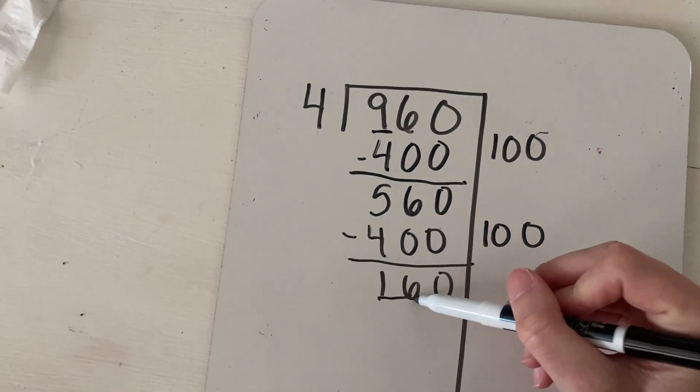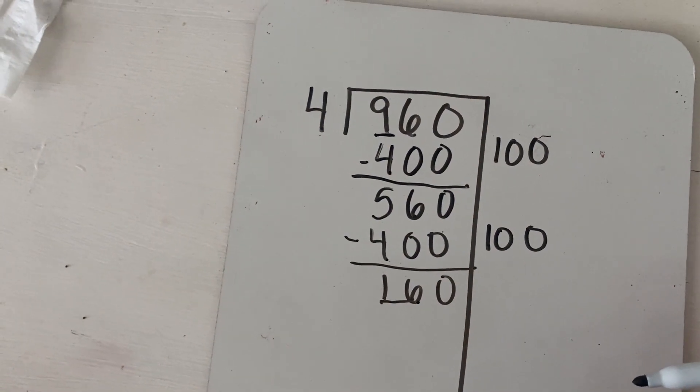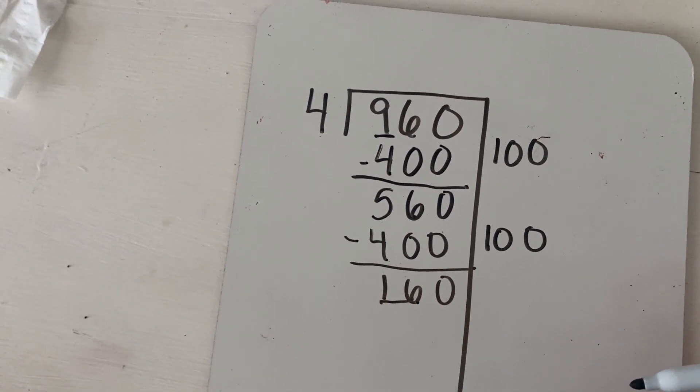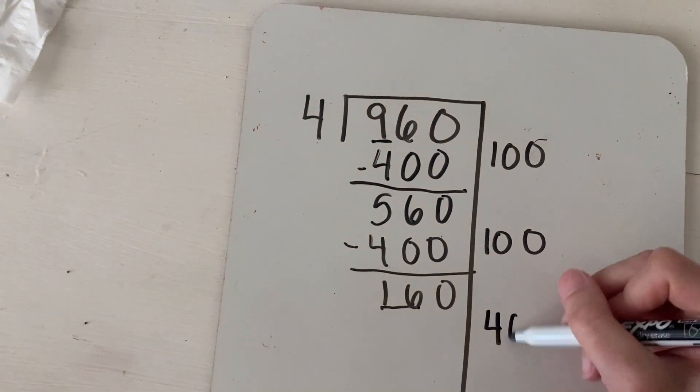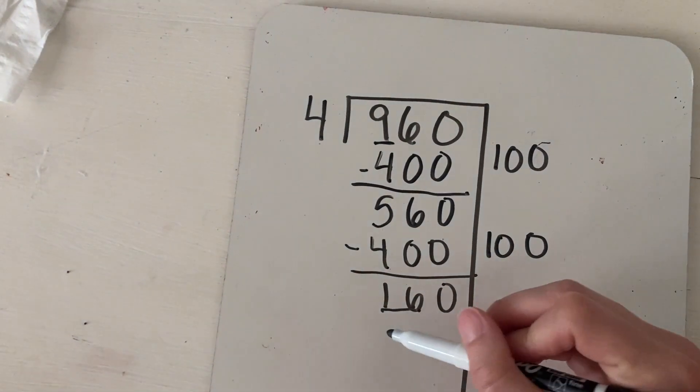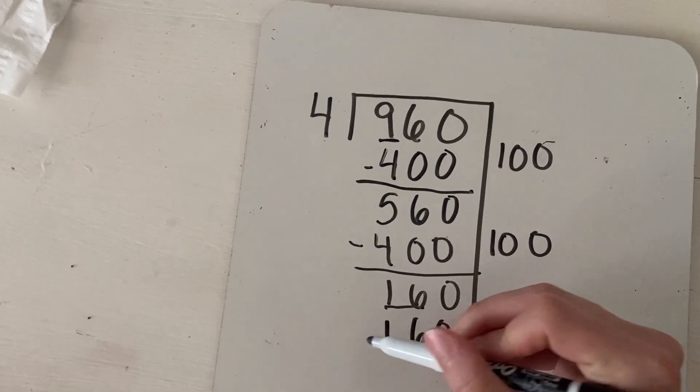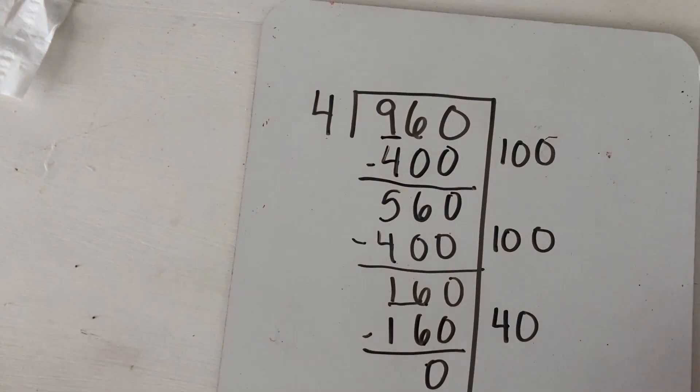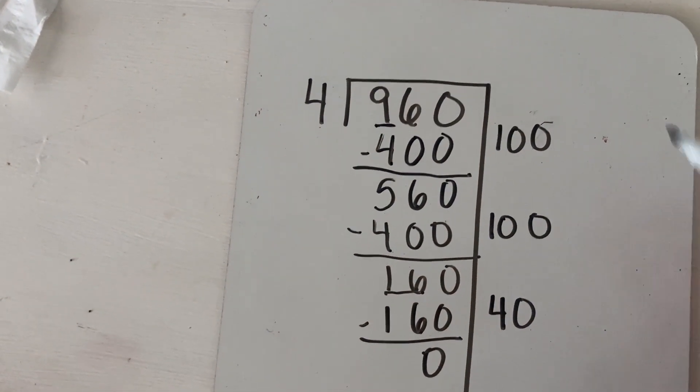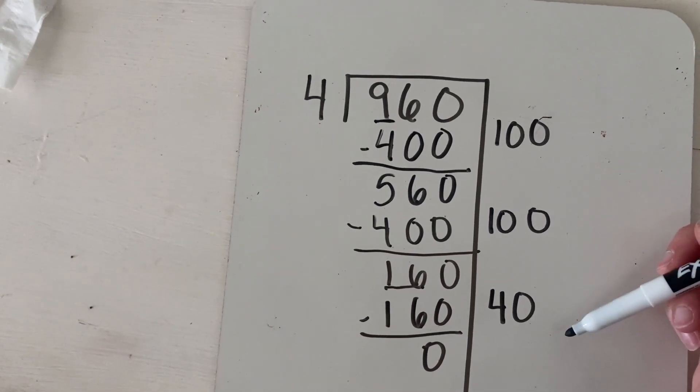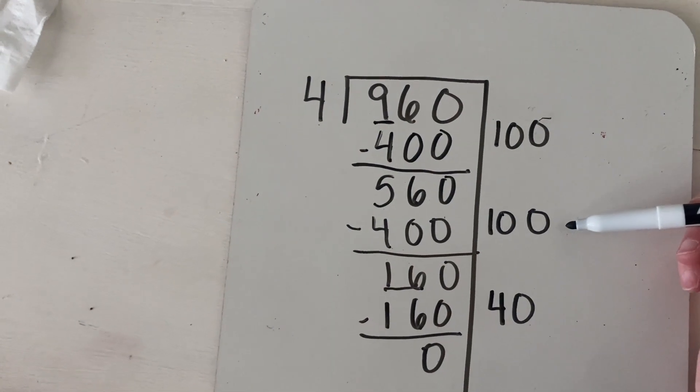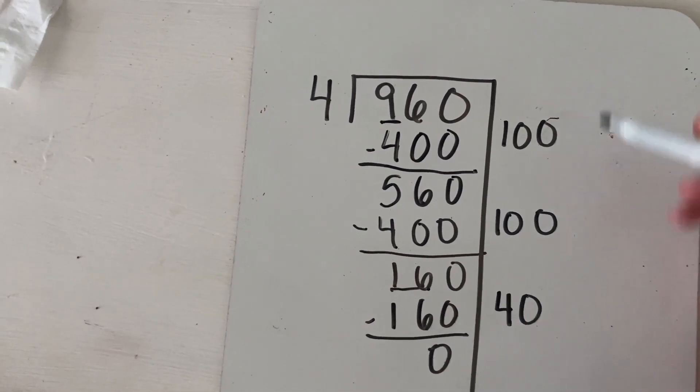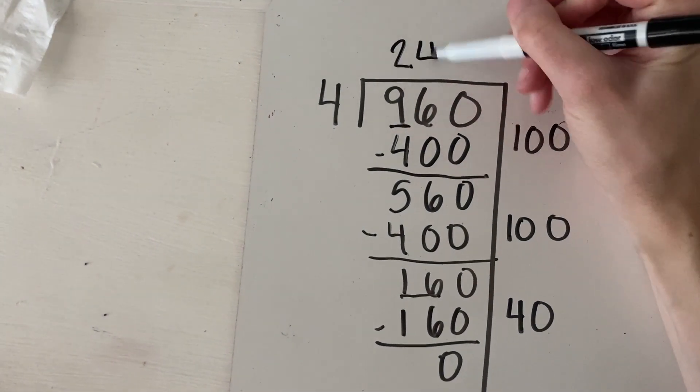So I might notice this has a 16 in it. And I know that four times four is 16. But there's an extra zero here. So what if I did four times 40? And that would equal 160. And in this case, I have no remainder. And again, I would go over here on the side and I would add up my totals. So I have 100 plus 100 is 200 plus 40 is 240.